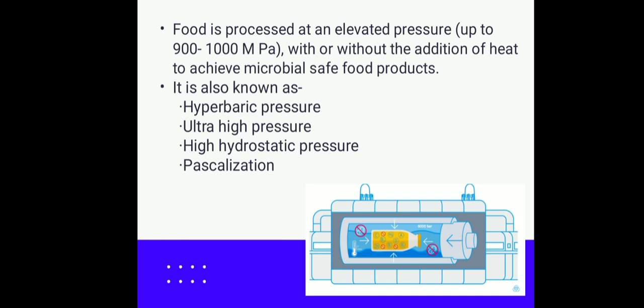As the name suggests, in this technique, food is processed at an elevated pressure which may range up to 900 to 1000 MPa with or without the addition of heat to achieve microbial safety of food products. We were looking at conventional practices where the preservation action was due to heat. But in this technique, we will be using high pressure maintained at room temperature for the preservative effect. Therefore, it is also known as hyperbaric pressure, ultra-high pressure, high hydrostatic pressure, and pascalization.